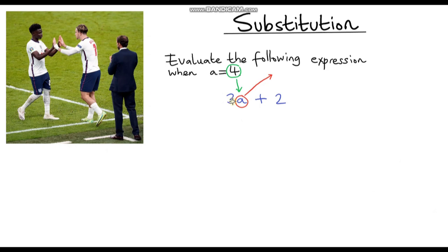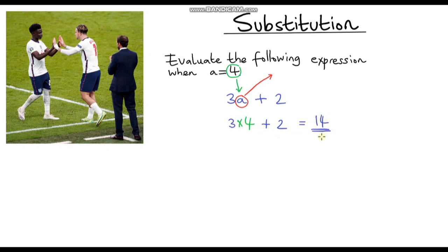So what we've got now is instead of 3a, we've got 3 times 4. Remember, this is multiplication. A lot of people make the mistake of just writing 34 — putting the 4 next to the 3 — but this is wrong. This is not 34; this is 3 times 4, because 3a means 3 times a. So instead of 3 times a, it's going to be 3 times 4, plus 2. 3 times 4 is 12, and 12 plus 2 is 14. So 14 is my answer — we have evaluated the expression because we have found a value.